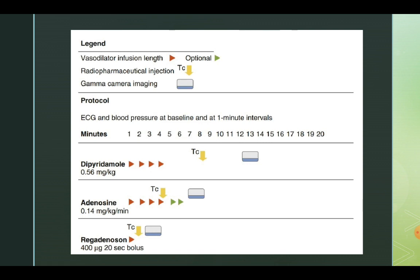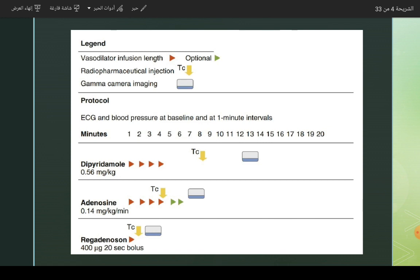The first one is dipyridamole. We use it at 0.56 milligrams per kilogram. We inject this drug intravenously in an infusion state during four to eight minutes. After eight minutes, we should inject the technetium or thallium. After 12 to 14 minutes, we can do the imaging protocol.